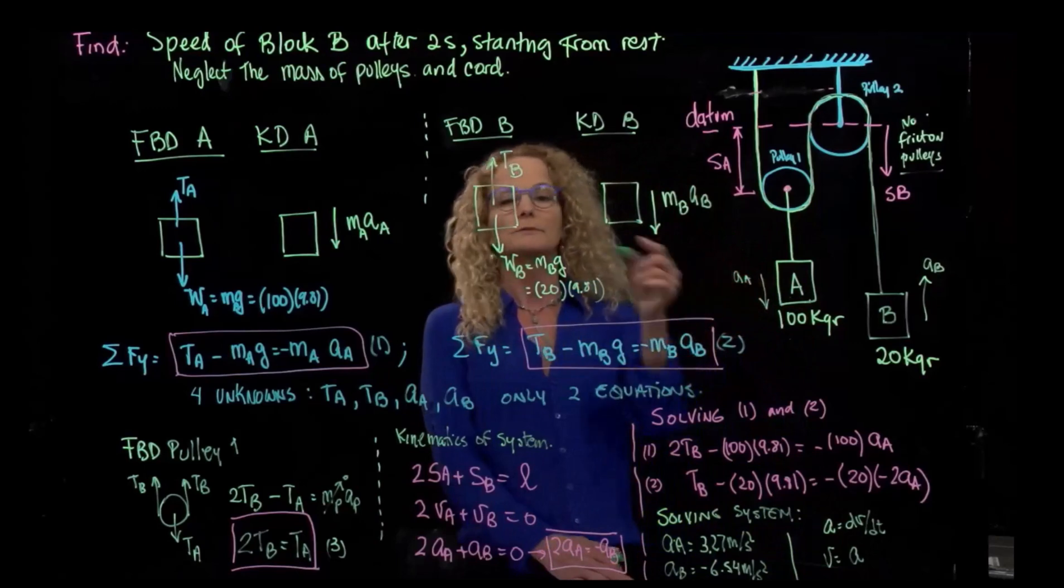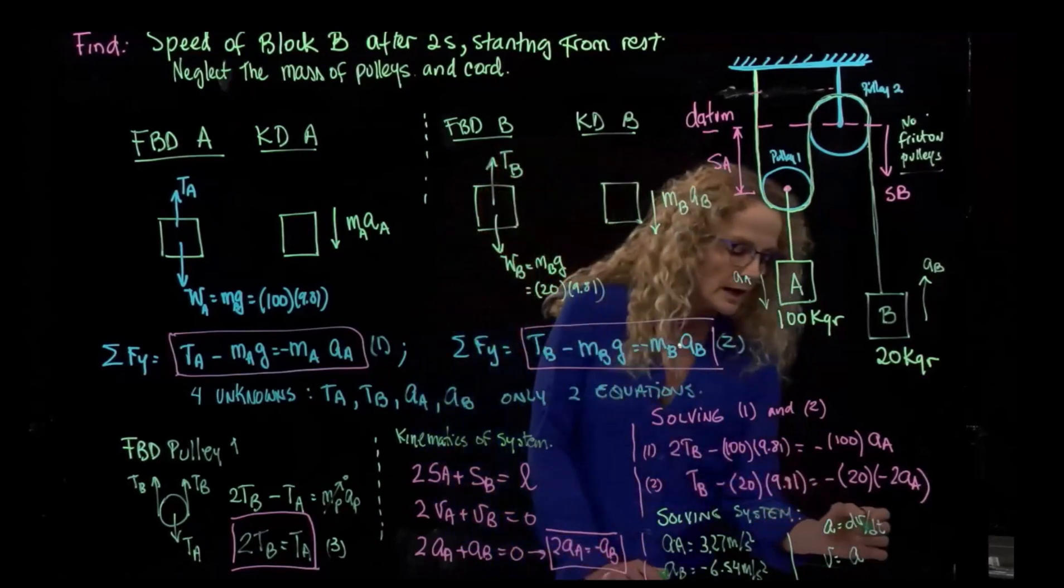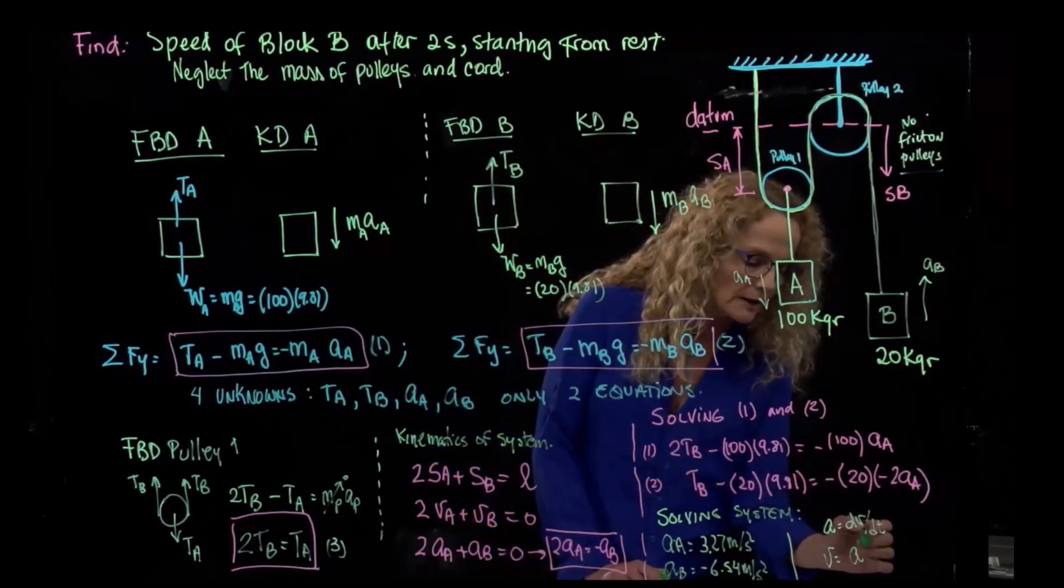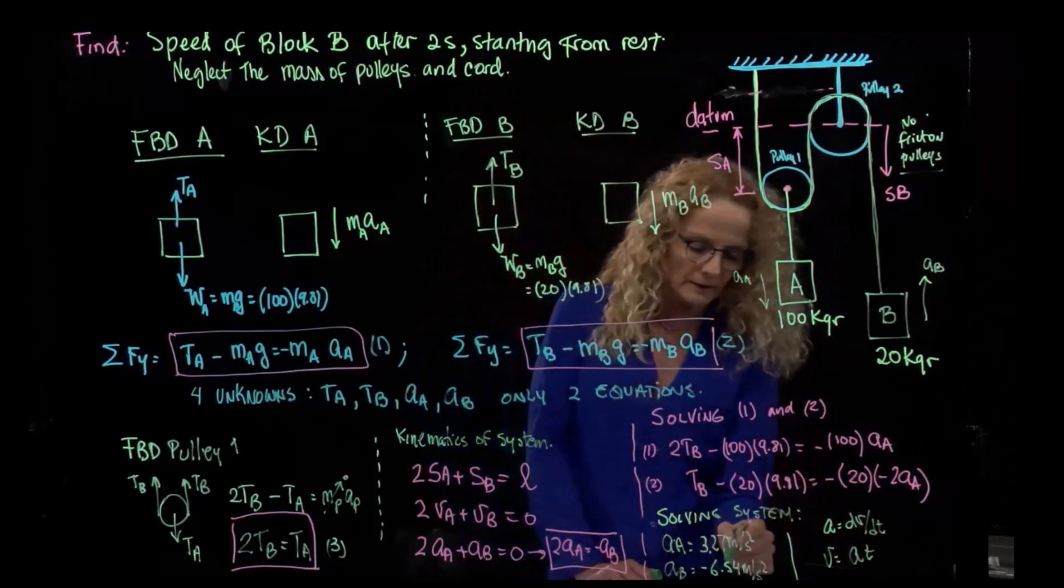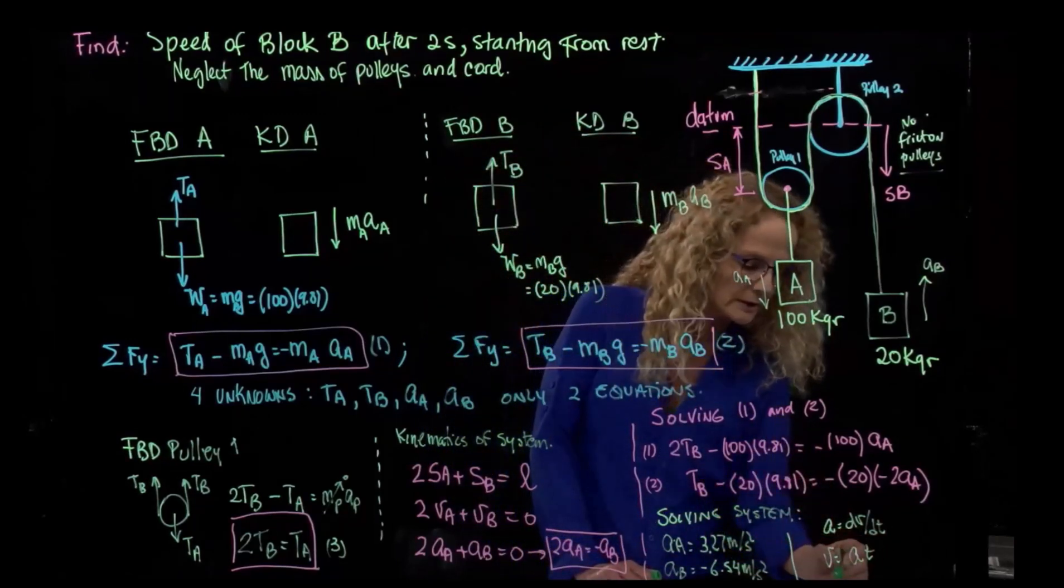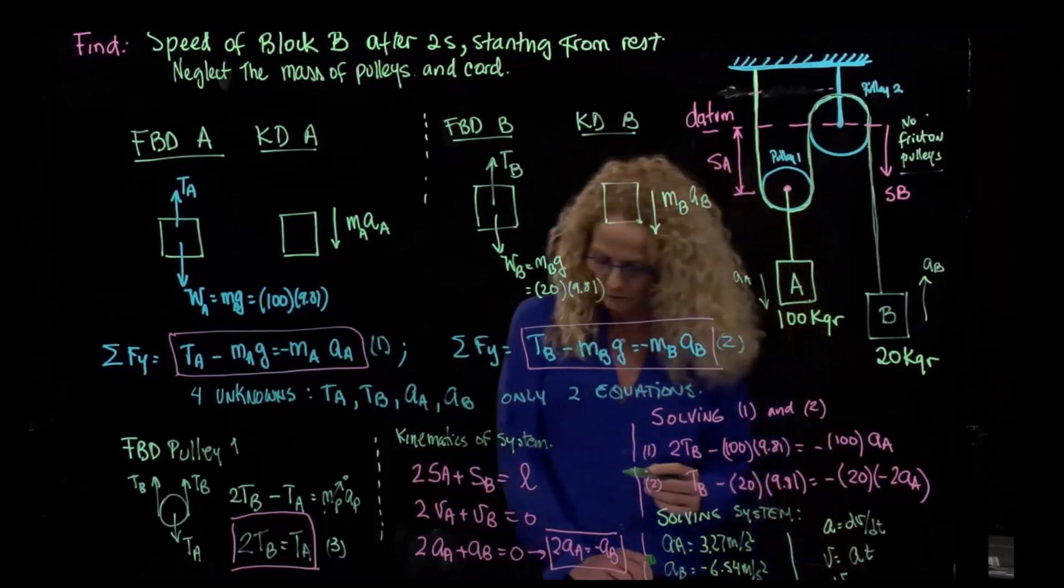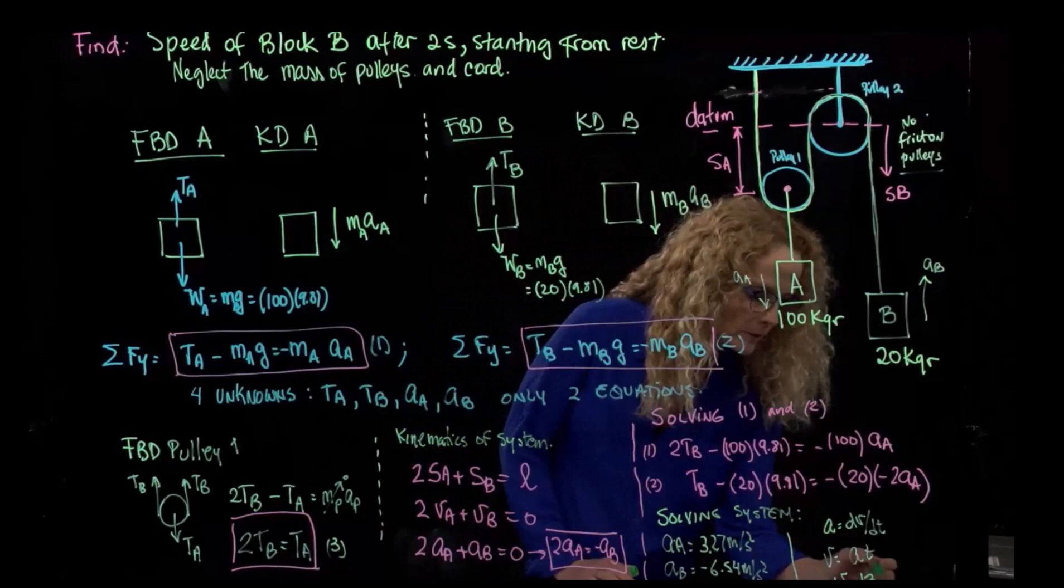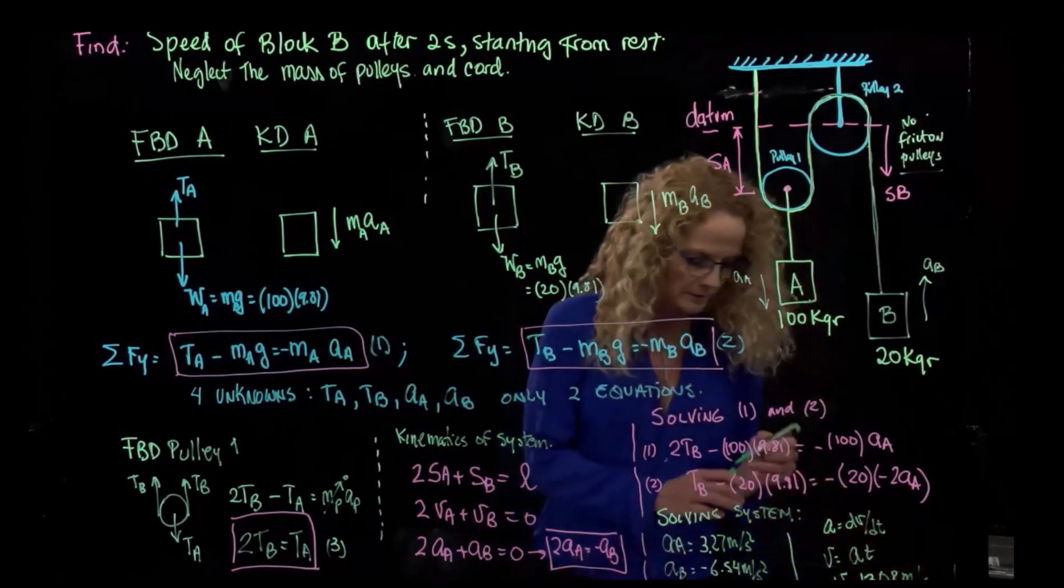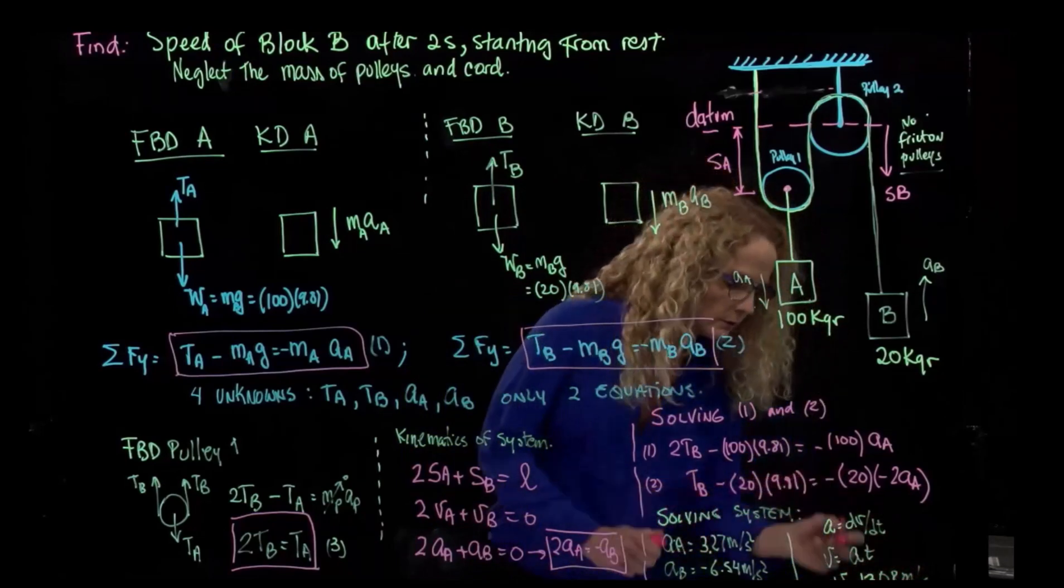I can say that the velocity is the acceleration, and this acceleration is constant because the gravity is constant, and then I have acceleration times time. Since the time is two, I just multiply this acceleration by two, and I get that the velocity is equal to 13.08 meters over second, and that's the result I was looking for.